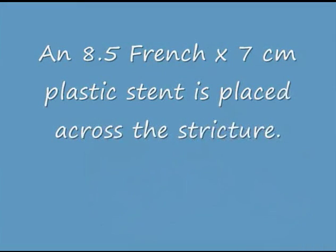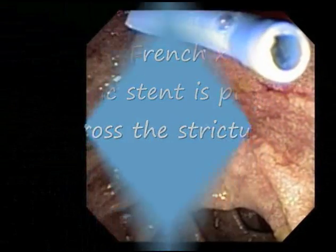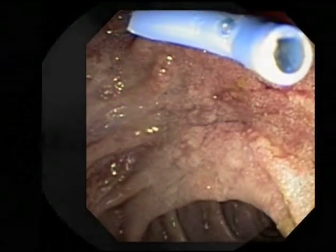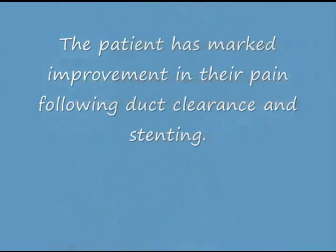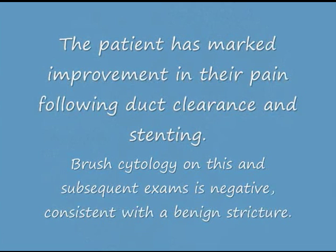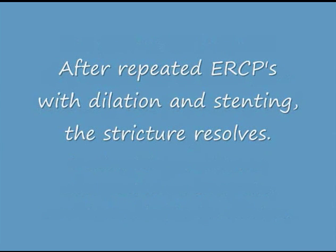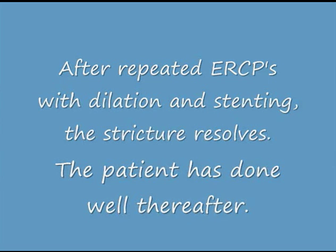An 8.5 French by 7 centimeter plastic stent is then placed across the stricture to provide pancreatic drainage and to dilate the stricture over a period of several weeks. The patient has marked improvement in pain following duct clearance and stenting. Brush cytology on this and subsequent exams is negative, consistent with a benign stricture. After repeated ERCPs with dilation and stenting, the stricture resolves and the patient has done well thereafter.